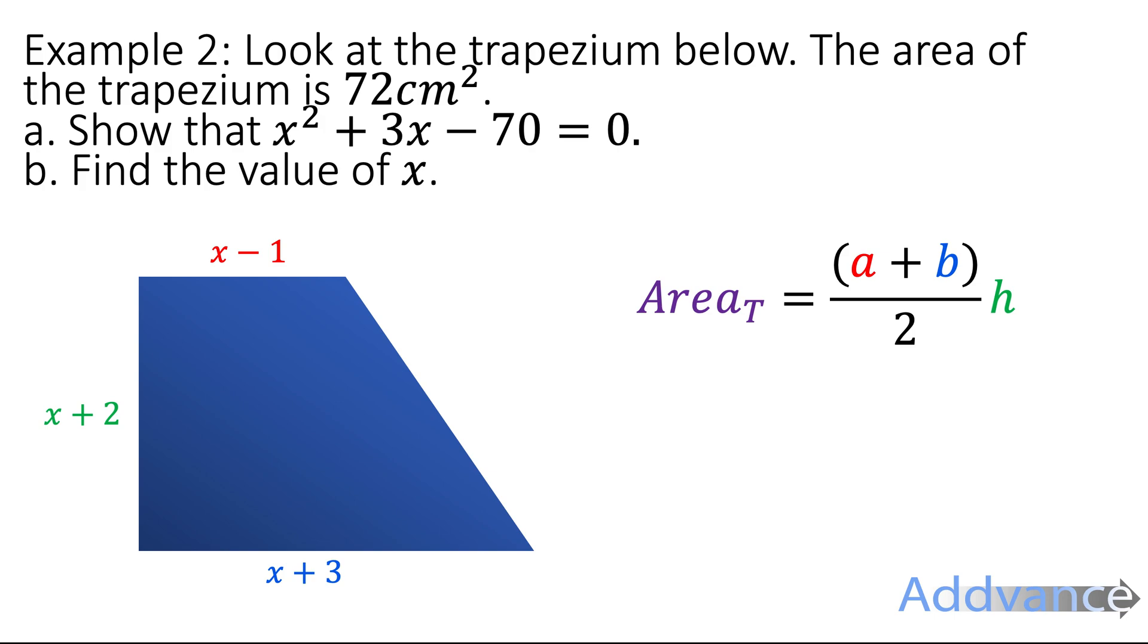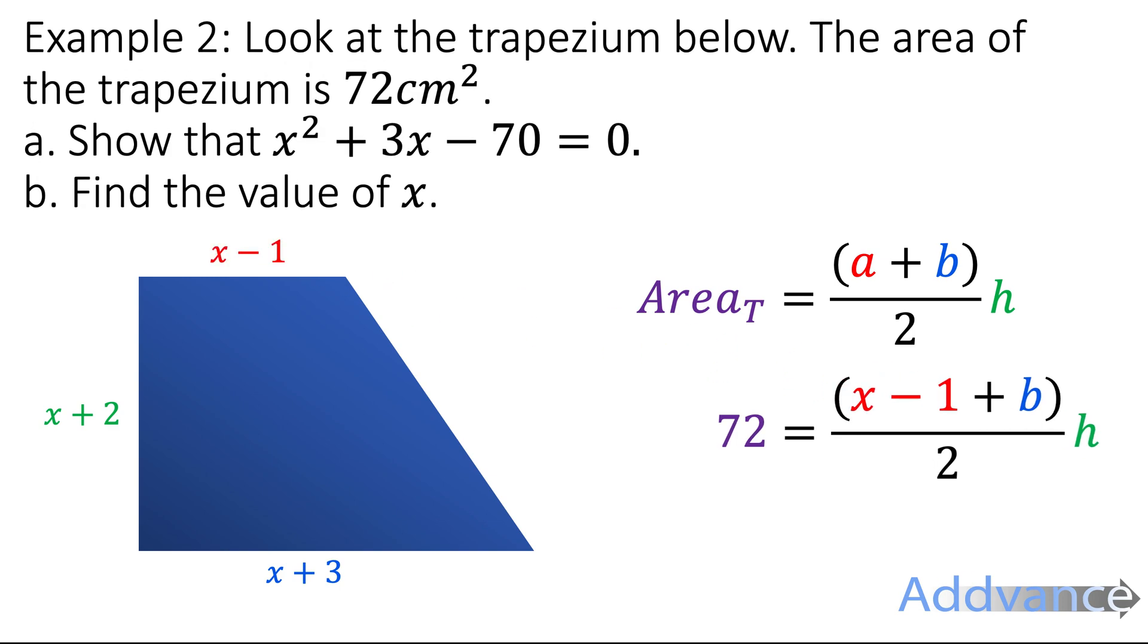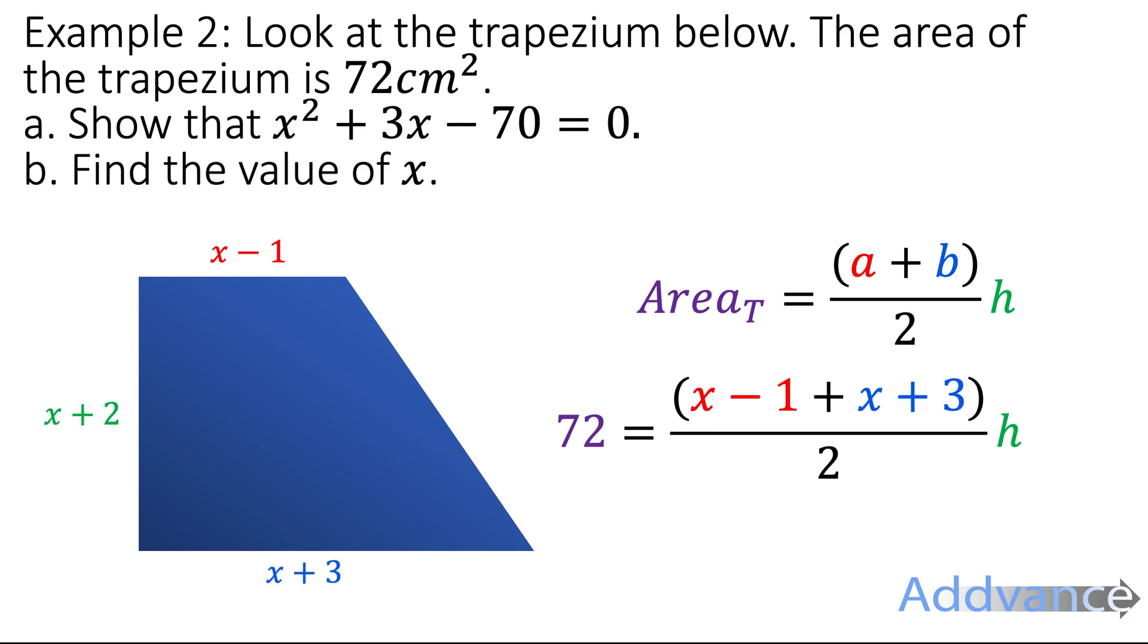So we're going to substitute the numbers in. Firstly we're going to substitute that the area is 72. Then the top of the trapezium is x - 1, the bottom of the trapezium is x + 3, and the height of the trapezium is x + 2.